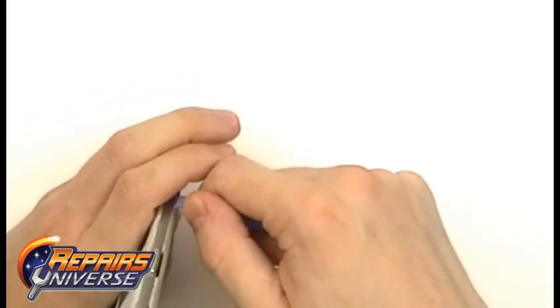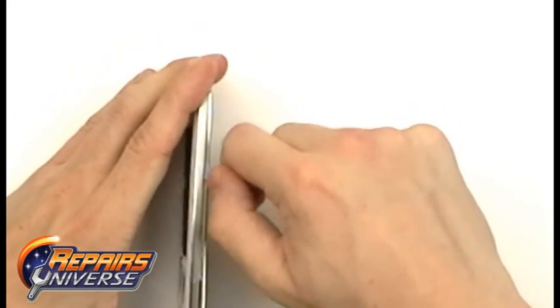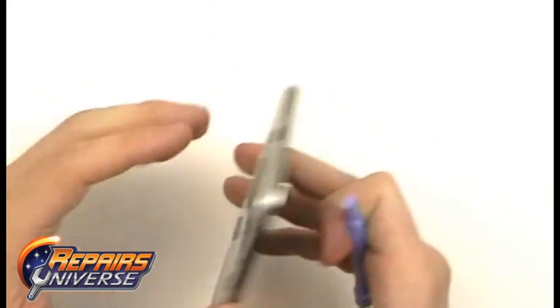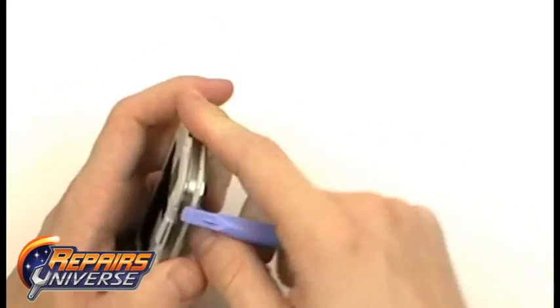With the first few clips released, it should be a very simple process of gliding this pry tool along the inner seam to release the other clips. Once all clips are released, you can then remove the back housing.